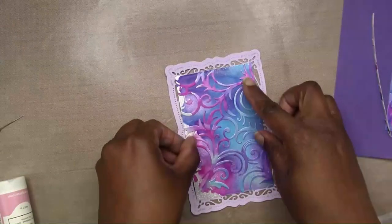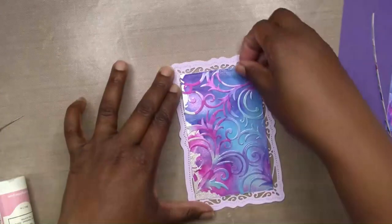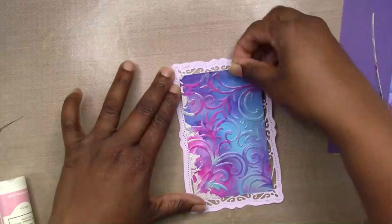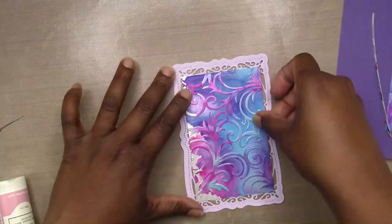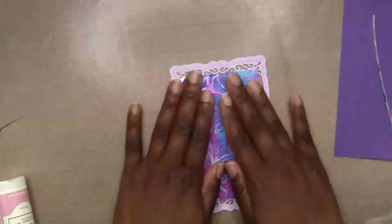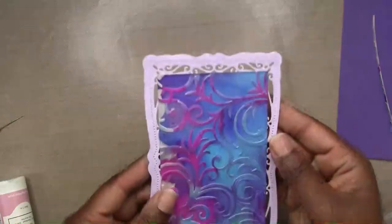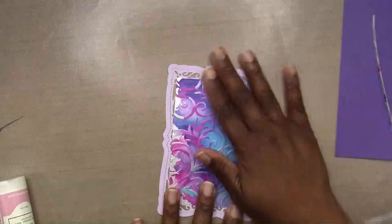The thing I like about using the liquid glue is I do have a little bit of time to adjust and move my piece around to get it exactly as I want it. This is my background for my card.